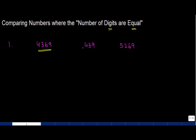Whenever the number of digits are different, we just find out how many digits are there. So let's say in this, there are how many digits, 1, 2, 3, 4, here there are 1, 2, 3, here again 1, 2, 3, 4.